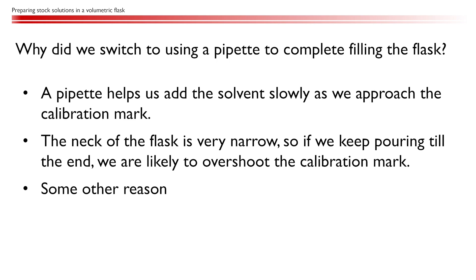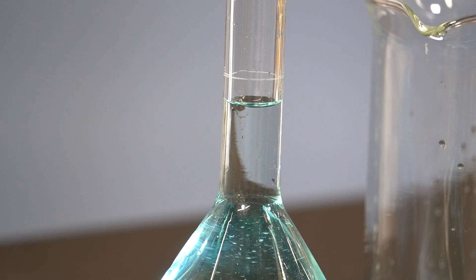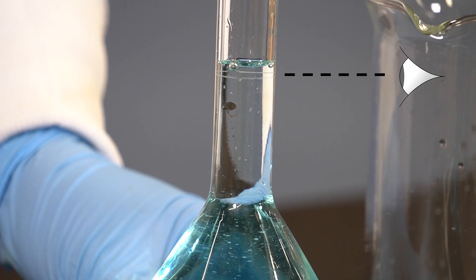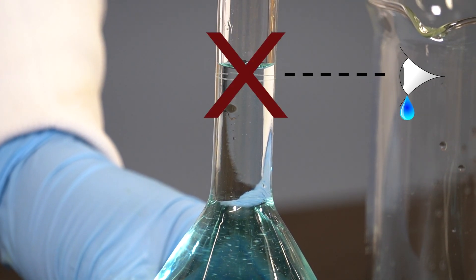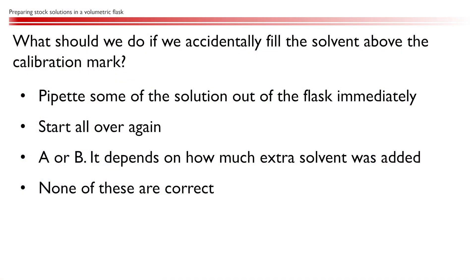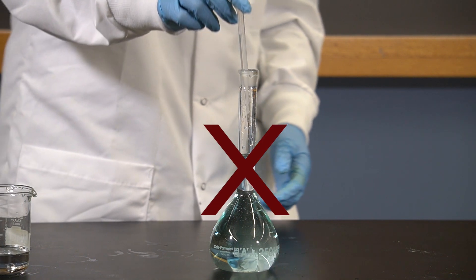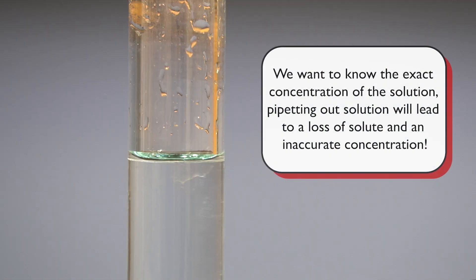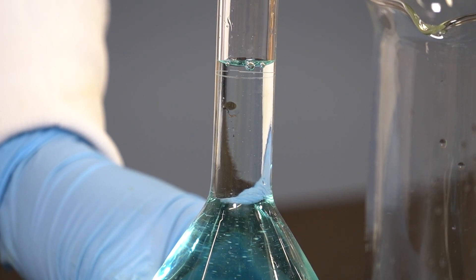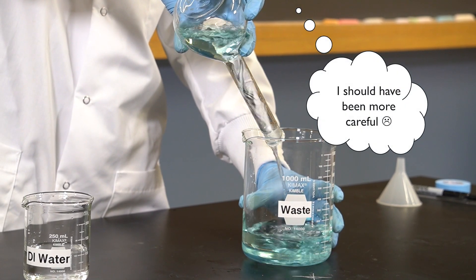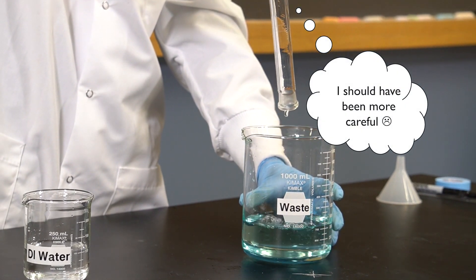Why did we switch to using a pipette to complete filling the flask? One of the most common mistakes when using a volumetric flask is overfilling the flask above the calibration mark. If we do that, then we've made a big mistake. So it is very important to slow down the addition of the solvent by switching to a pipette as we approach the end. What should we do if we accidentally fill the solvent above the calibration mark? Pipetting out the extra solvent from the flask will result in loss of solute, making the concentration inaccurate. Keep in mind that our goal is to prepare a solution with an accurate concentration. So, if extra solvent is added above the calibration mark, then unfortunately we will have to restart the entire process. This can be very frustrating and time consuming, so it's important to slow down at that step and make sure you're doing a good job filling the flask.